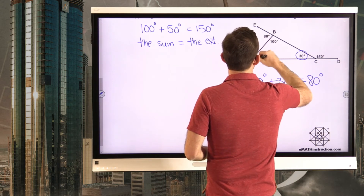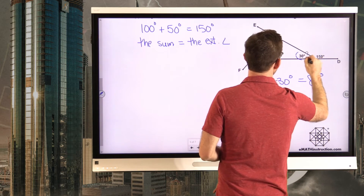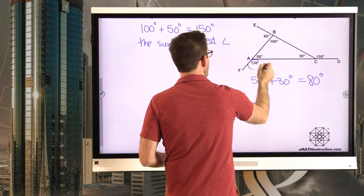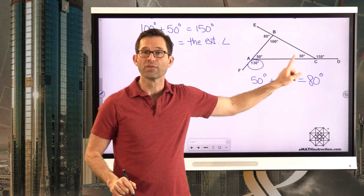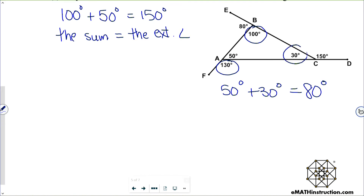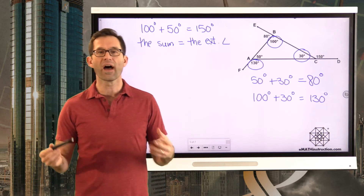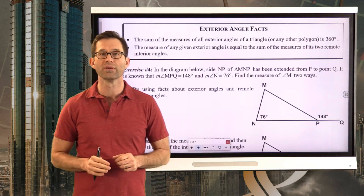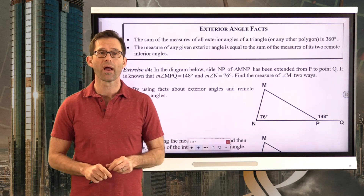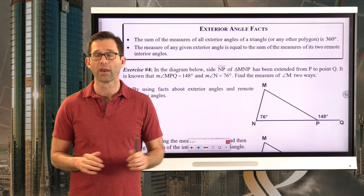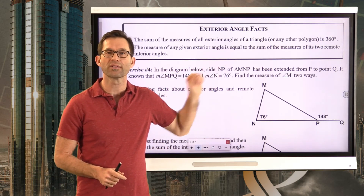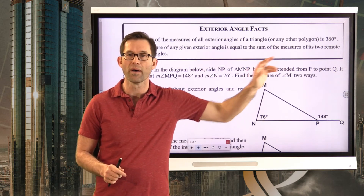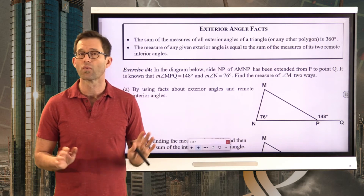Our last exterior angle is that 130 degree angle. There are the two remote interior angles, and again that relationship holds: 100 degrees plus 30 degrees is 130 degrees. So that's the other really interesting thing about exterior angles. There are two main properties: one, the sum of all the exterior angles is going to be 360 degrees regardless of whether it's a triangle or anything else. But for triangles, the measure of any given exterior angle is always equal to the sum of the measures of its two remote interior angles.